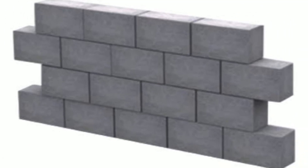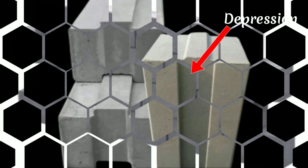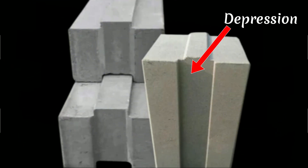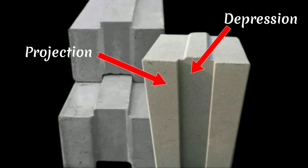As the name suggests, interlocking bricks are connected with each other. They have the provision to connect one brick to another. The shape of the interlocking brick looks different from normal bricks — it has a depression area and a projection area, which help to interlock the bricks with one another.